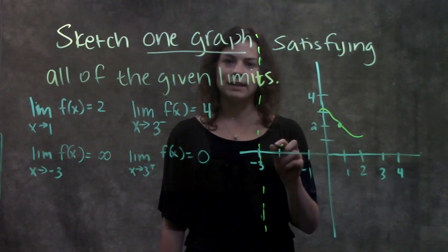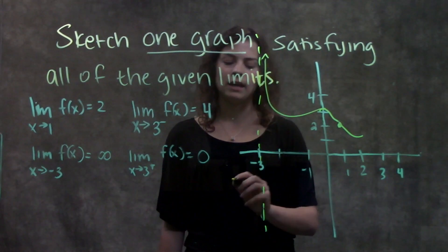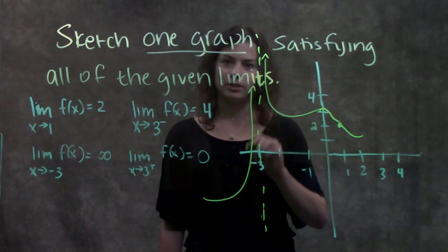From both the left and the right-hand side, our graph is approaching infinity. We're going to go from the right-hand side, it's approaching infinity. From the left-hand side, it's approaching infinity.